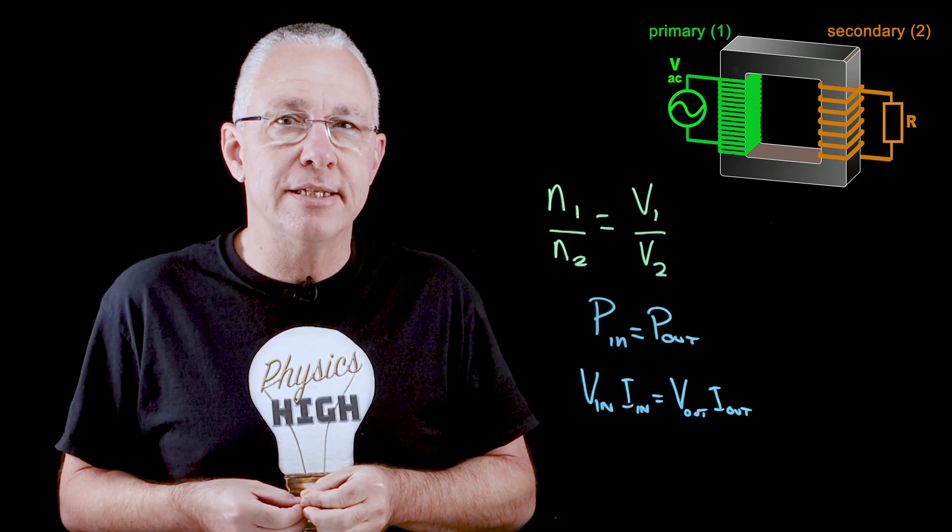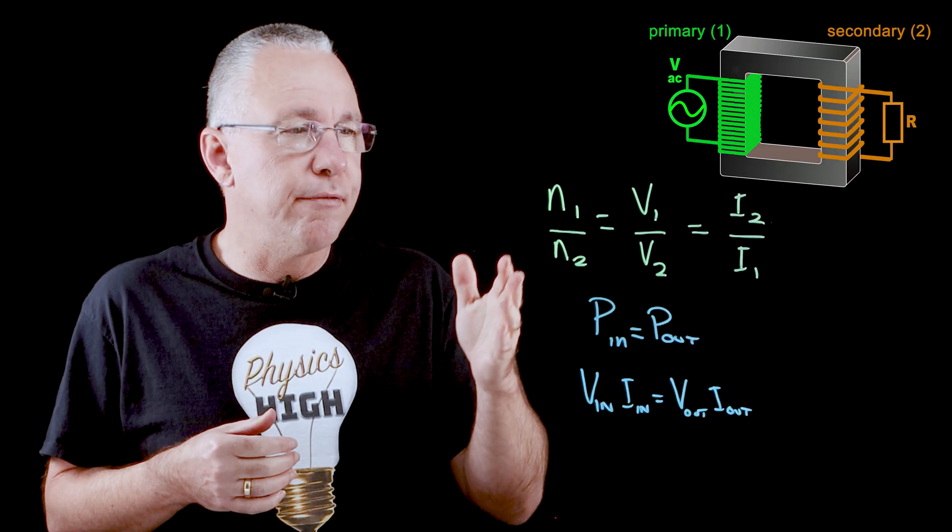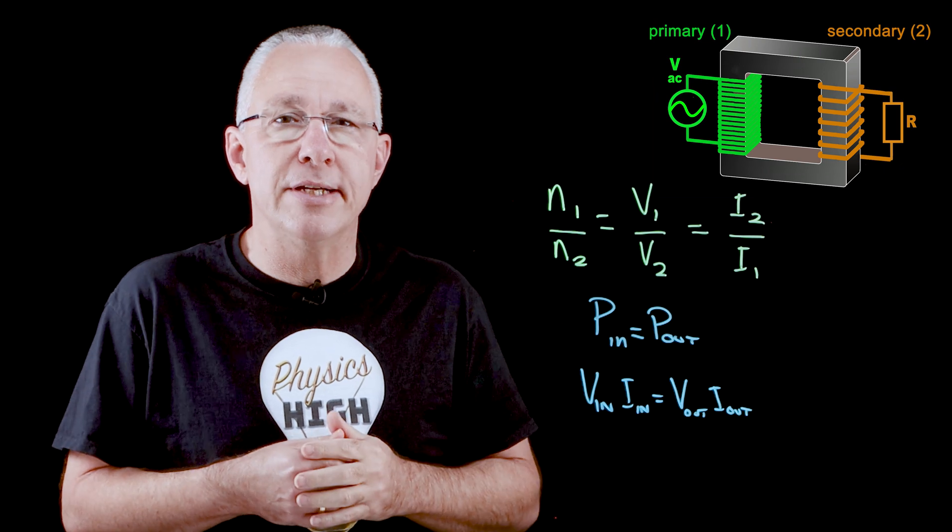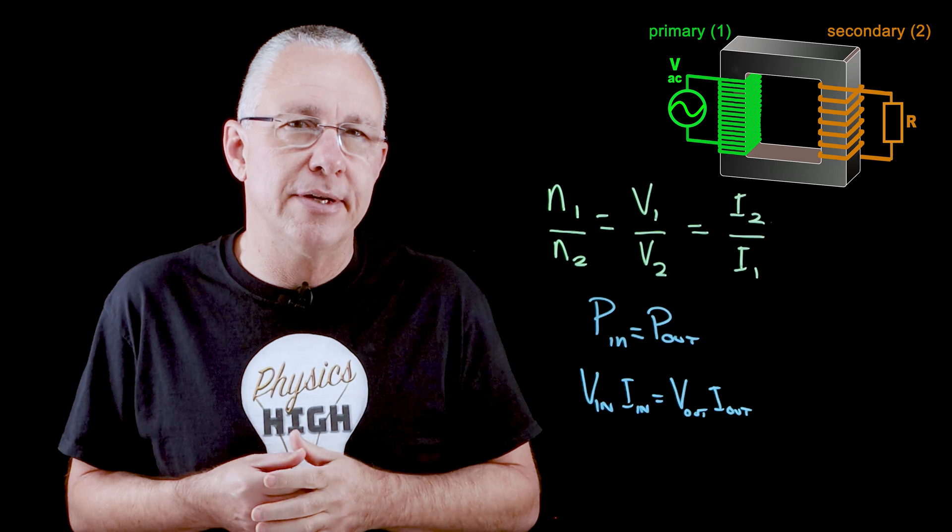So in the case of a step-down transformer, even though the voltage decreases, the current increases. In the case of a step-up transformer, the voltage increases but the current decreases.